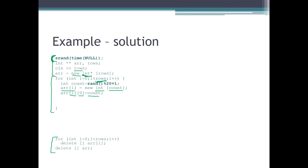The very first element (element number zero) is now filled with the correct length of row i. We also need to fill the other elements of row i with random numbers. So we create a for loop that goes through the rest of this row, starting with element number one — since element number zero is already filled — and going until count minus one. For each element r[i][j] we assign a random number from one to 100. Now the whole structure is created and filled with random numbers.